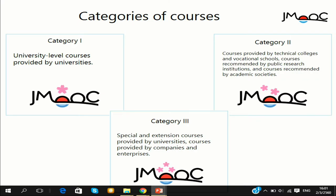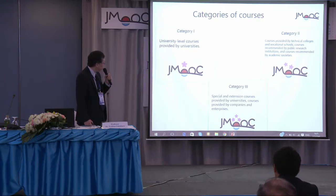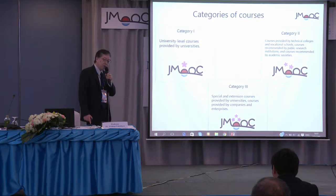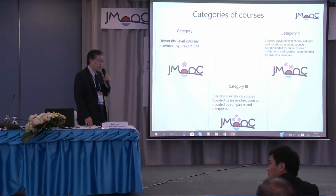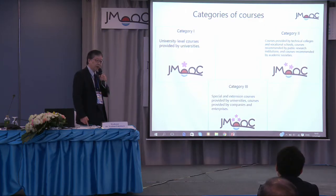Category two means courses provided by technical colleges and vocational schools, or courses recommended by public research institutions and academic societies. And the final, category three, means special and extension courses provided by universities — most universities provide extension or special courses that are open to the public, not for credit. Based on these categories, learners can select courses from a category point of view.